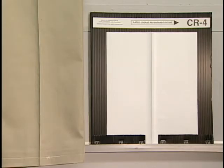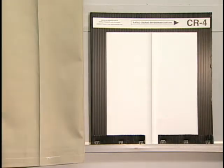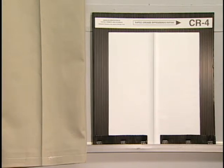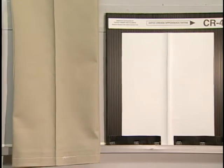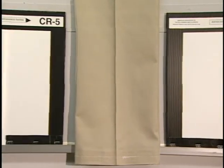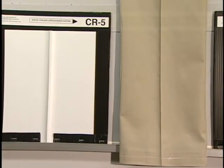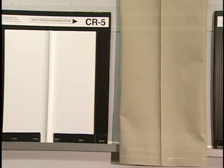Regardless of the test chosen, the evaluation procedures follow washing, drying, hanging, and conditioning. After conditioning, the specimens are mounted on the viewing board with the crease in the vertical direction. The most similar three-dimensional plastic crease replicas are placed on either side of the specimen to facilitate comparative rating.